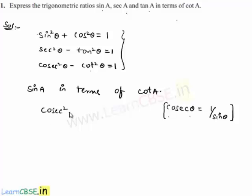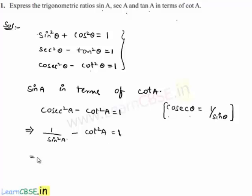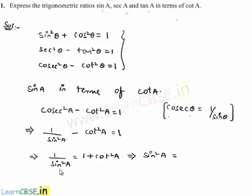Considering the third identity: cosecant squared a minus cot squared a equals 1. This implies cosecant squared a can be written as 1 by sine a whole squared, which is 1 by sine squared a. So 1 by sine squared a minus cot squared a equals 1, which implies 1 by sine squared a equals 1 plus cot squared a by transposing. That implies sine squared a equals 1 by 1 plus cot squared a.